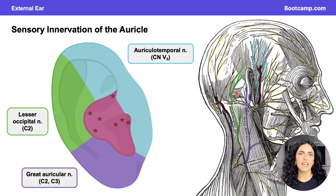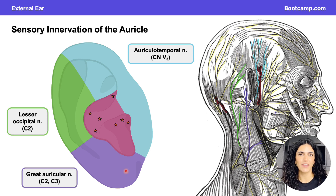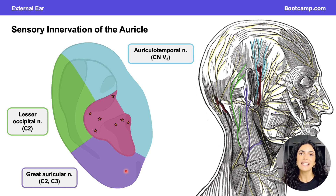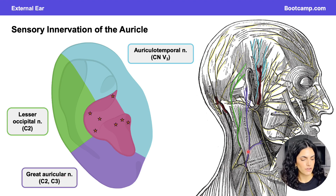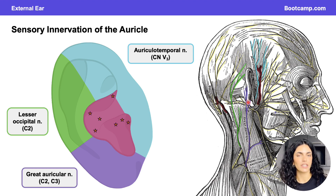Innervating the lobule and the more inferior aspects of the ear is the great auricular nerve, shown here in purple. Similar to the lesser occipital nerve, it originates from the cervical plexus but has nerve roots C2 and C3. It passes posteriorly along the sternocleidomastoid and ascends to give off branches supplying the lobule.